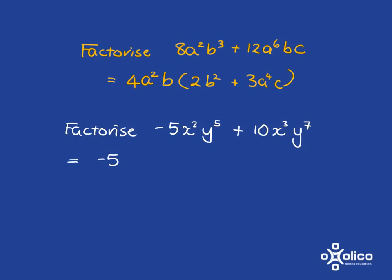So for now, I'm going to actually choose negative 5. Then of x squared and x cubed, it's x squared. y to the 5 and y to the 7, it's y to the 5.